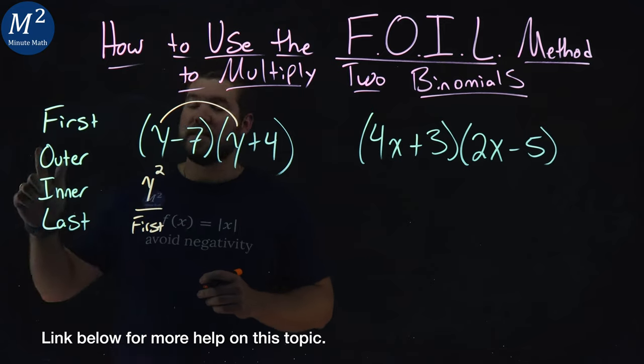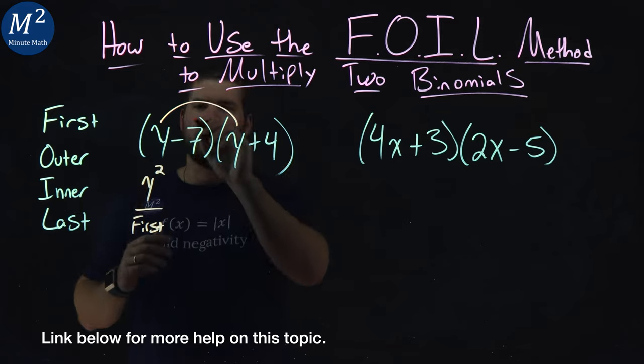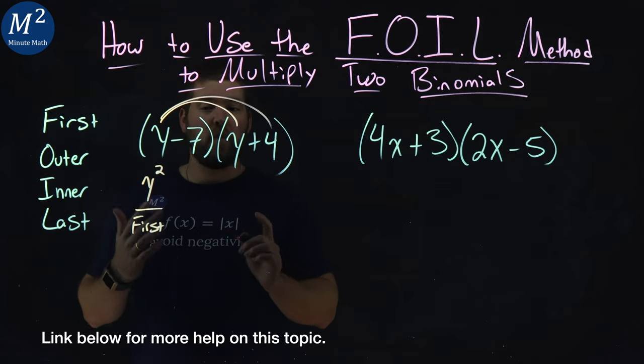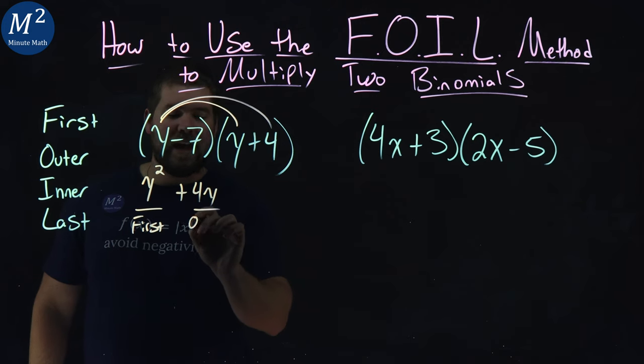Then we have the next step is the outers. So y times the four on the outside here. y times four is four y. We have plus four y. Again, that's the outer.